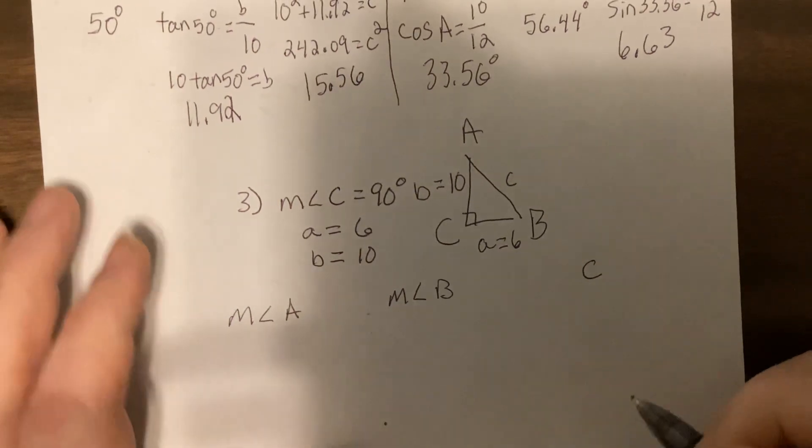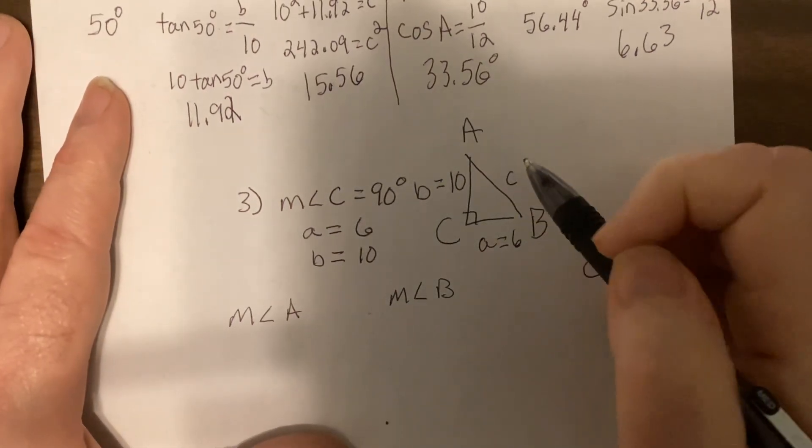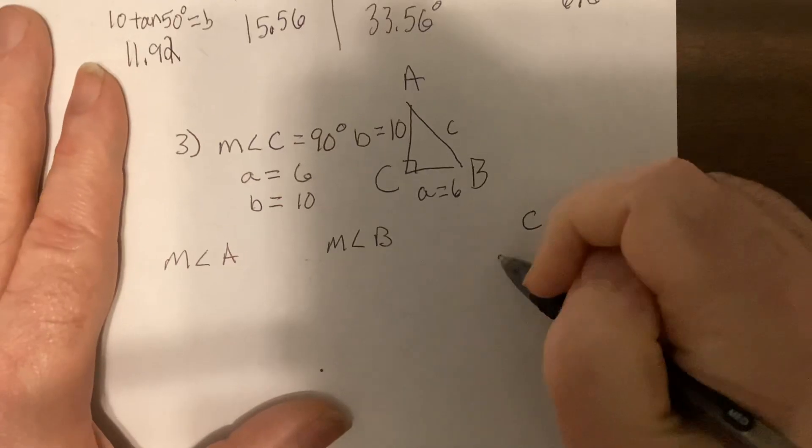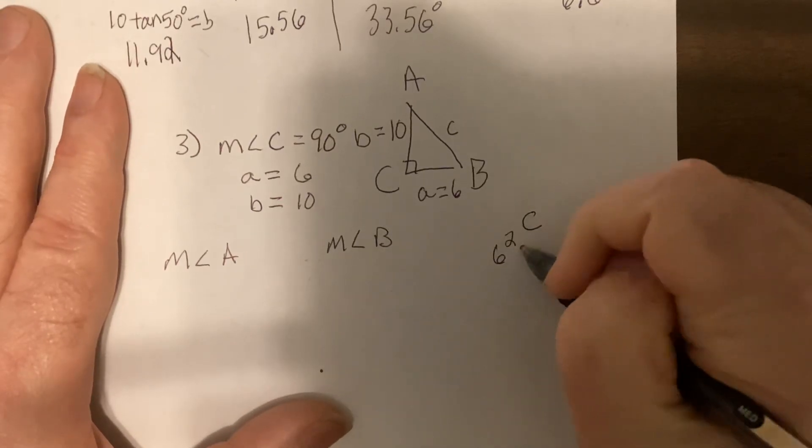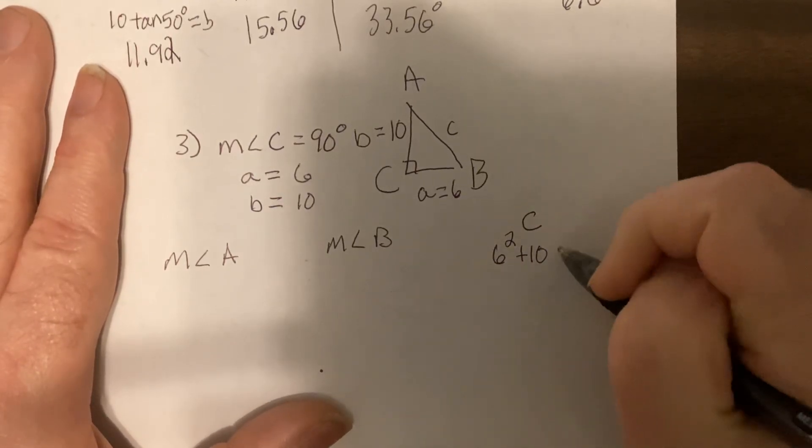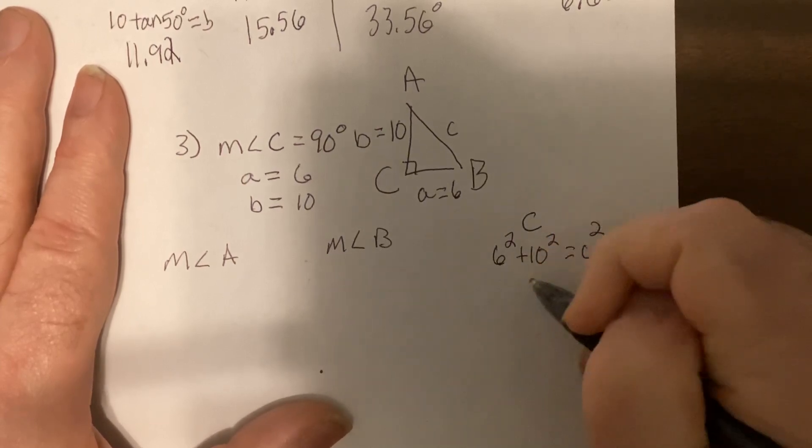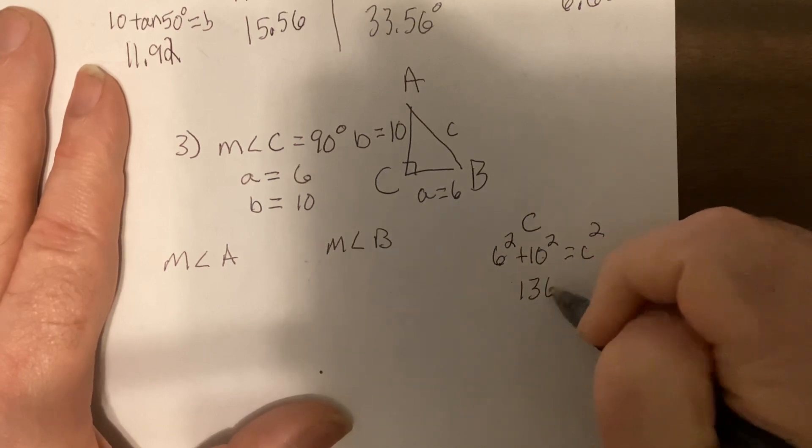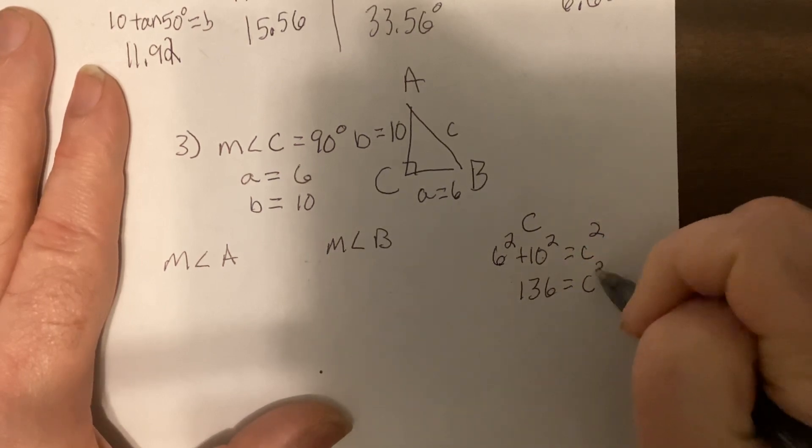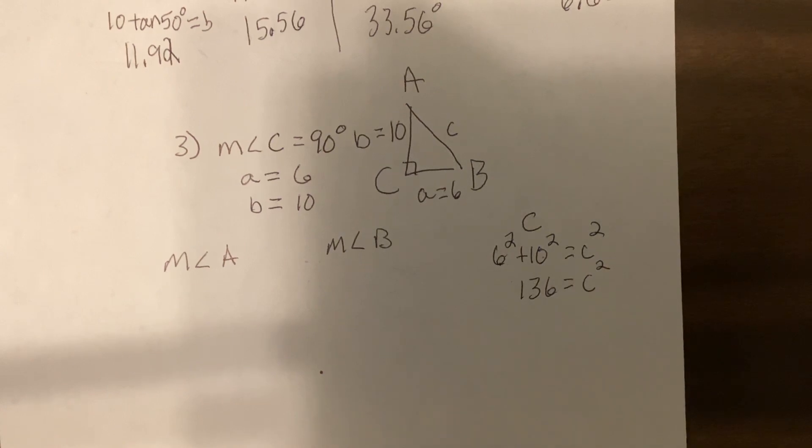Hopefully you got all three right. I would do Pythagorean theorem myself, don't have to, whatever makes you happy. So that would be 36. 6 squared is 36, 10 squared is 100, so that's 136 is c squared. So the square root of 136 is 11.66.